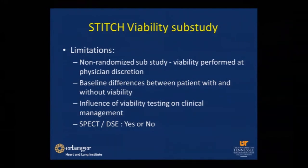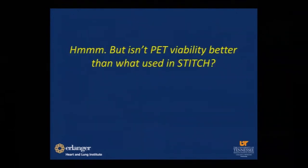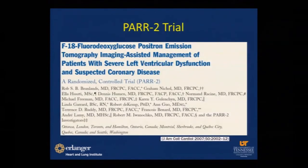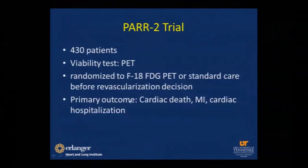The question then was: what about the extent of myocardial viability, and whether more advanced imaging would do better? Here comes the PAREPET trial — a Canadian trial that used cardiac PET with FDG to do the same thing the STITCH subgroup did: assess improvement in LV dysfunction patients with revascularization. They enrolled 430 patients using PET FDG as the primary modality, randomized between two groups, with a primary outcome of cardiac death, MI, and cardiac hospitalization.